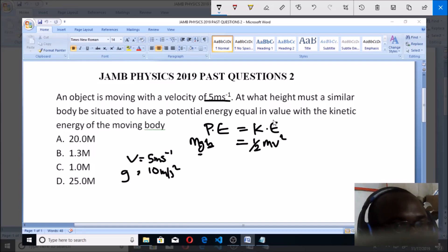To have a potential energy equal in value to kinetic energy, PE = KE. This height is what we're looking for. If we make h the subject, you'll have h equals ½mv² over mg. Very simple, just making h the subject of the formula.